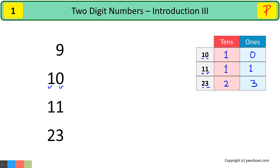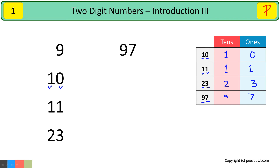Same way, we will be moving on the number line. Let us say we have number 97. In this number, we have 7 at the ones place and 9 at the tens place. So, number 97 is a two-digit number.